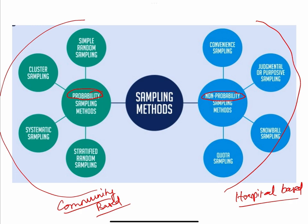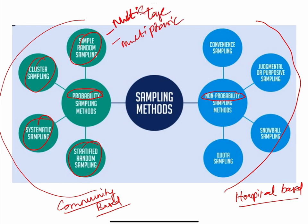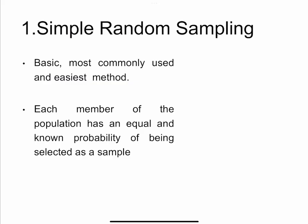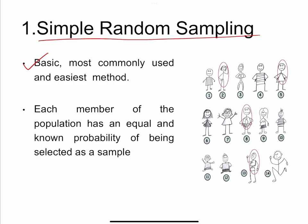Under probability sampling methods we have simple random sampling, systematic random sampling, stratified random sampling, cluster sampling, multi-stage sampling, and multi-phasic sampling. Under non-probability sampling we have convenient sampling, judgment or purposive sampling, snowball sampling, and quota sampling. These are all the commonly used non-probability sampling methods and each type is going to be dealt with in detail in this presentation.